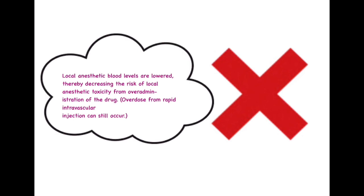As the local anesthetic blood levels are decreased, the chances of increased anesthetic activity at that site and the increased risk of local anesthetic toxicity due to over-administration of the drug are greatly minimized. When redistribution is occurring without the use of a vasoconstrictor, we naturally have to compensate by increasing the amount of local anesthesia delivered, which might lead to over-administration. Therefore, adding a vasoconstrictor decreases the risk of over-administration of the anesthetic solution.